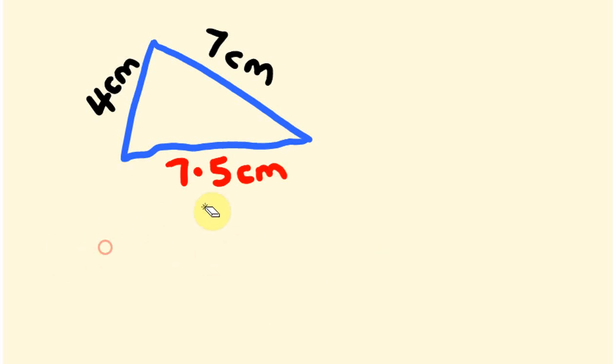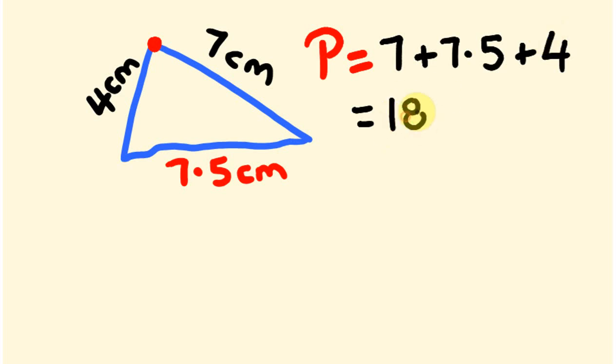So the perimeter is going to be just all these sides added together. So starting here and I'm going to go in this clockwise direction. So I'm going to add 7, 7.5 and 4. So the perimeter equals 7 plus 7.5 plus 4. And we add these together. This is all going to be in centimeters. 7 plus 7.5 is 14.5 plus 4 is 18.5 centimeters. How'd you go with that?